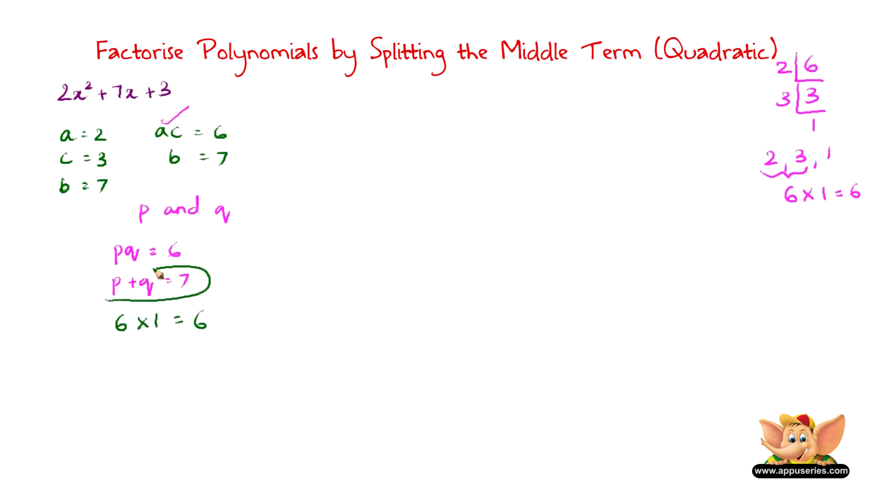That is we can write p as 6 and q as 1 and therefore we get 6. Now we need p plus q as 7, so yeah 6 plus 1 is 7, so we have found pq such that pq is equal to 6 and p plus q is equal to 7.